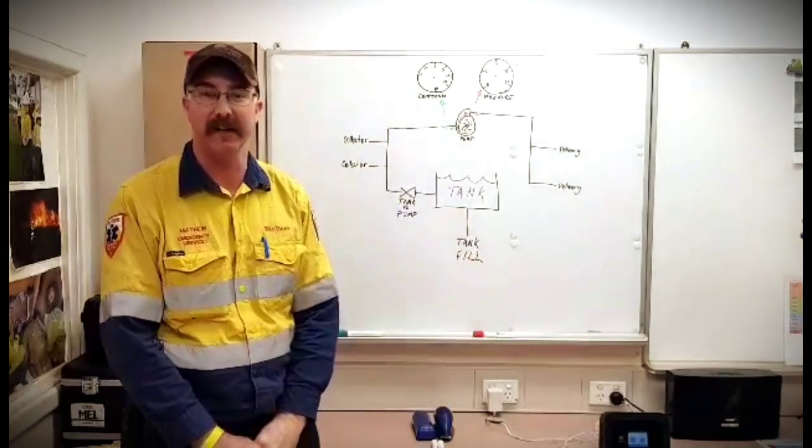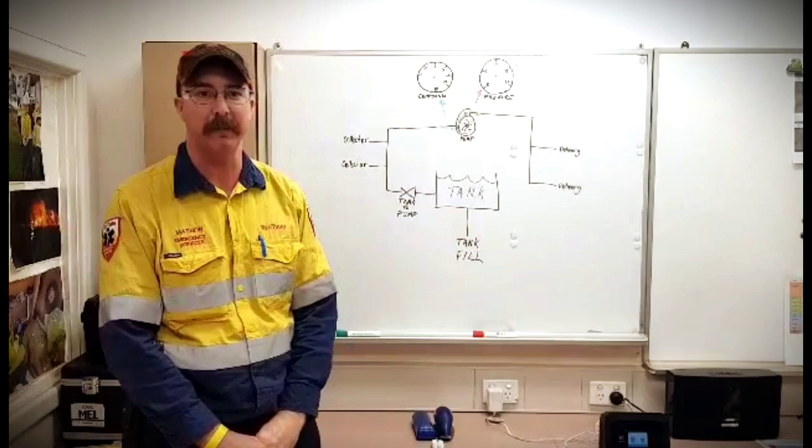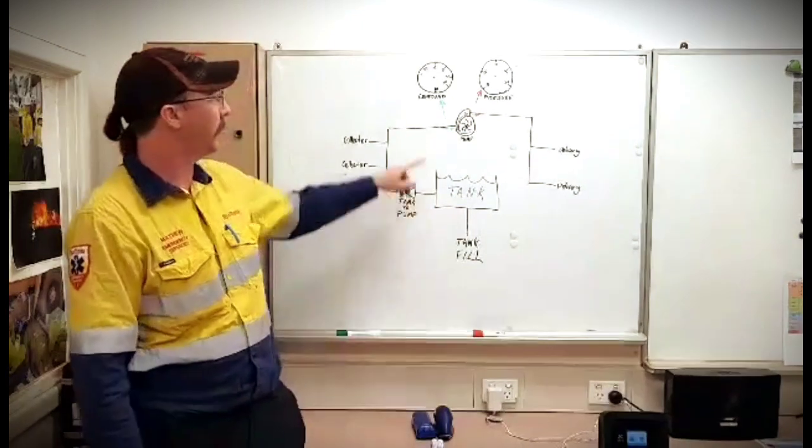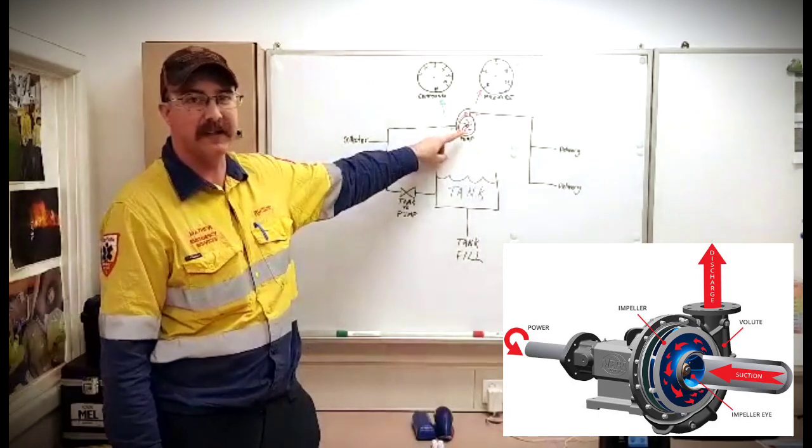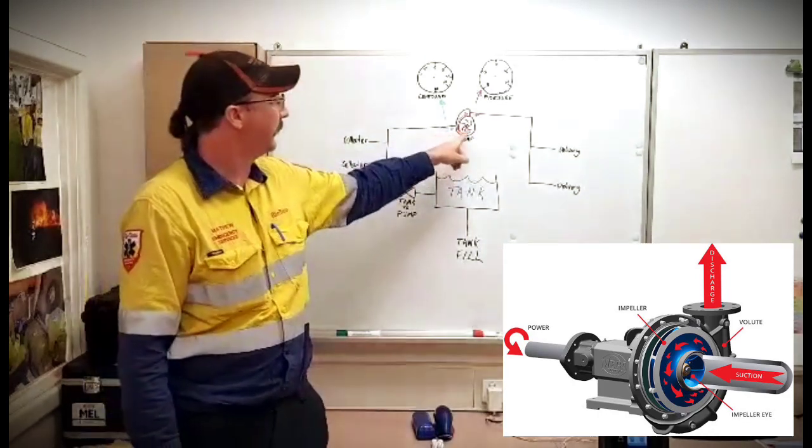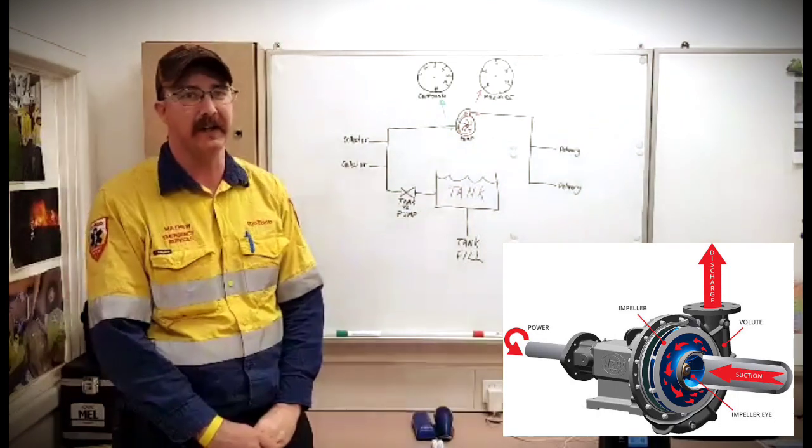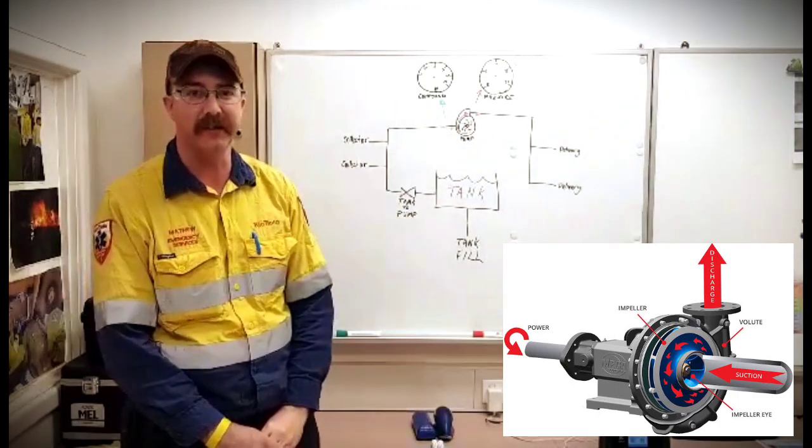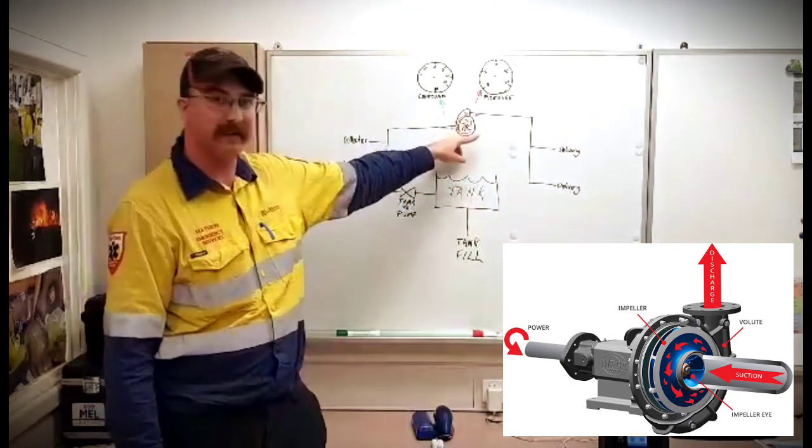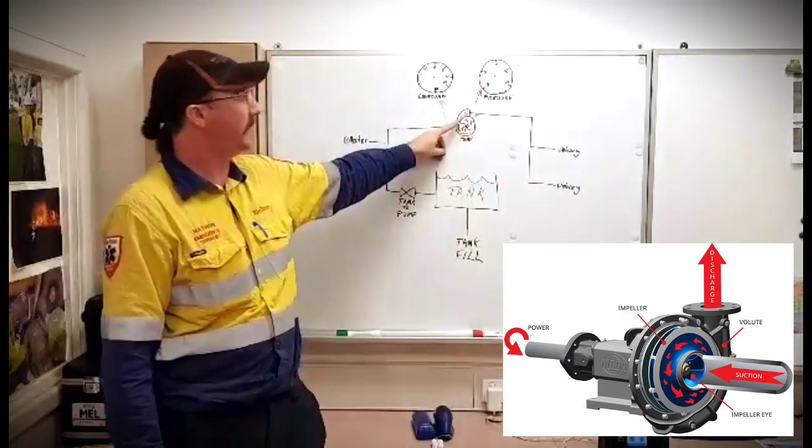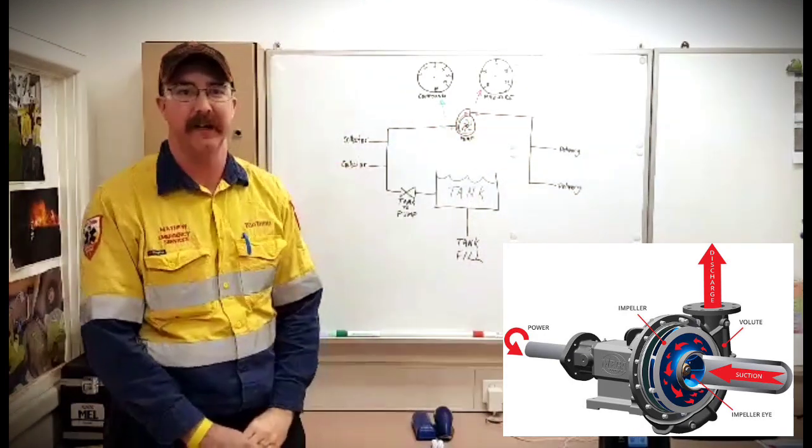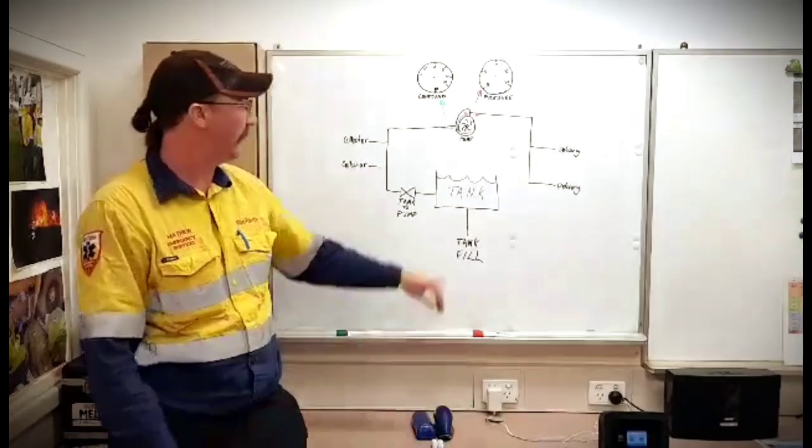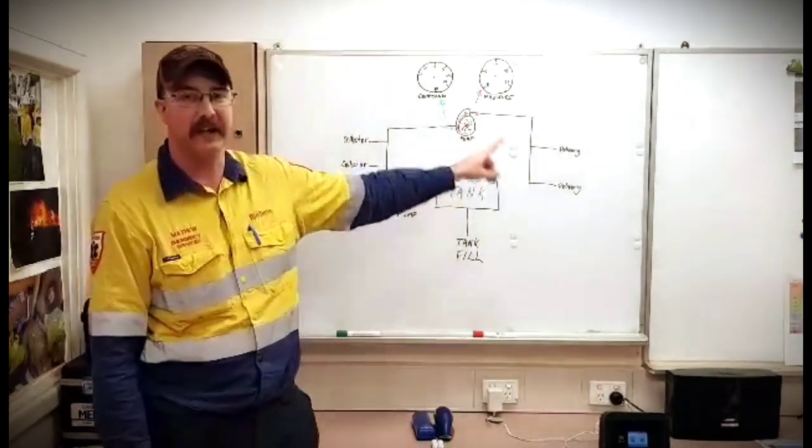Now in the fire service we use a centrifugal pump. The way this works is the water comes in through the eye of the pump which is in the centre here, and it travels through the vanes of the centrifuge. Here's the outer casing of the pump. It's released in here which we call the volute and then out the outlet. This takes it from a static supply from our tank into an energized supply.